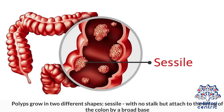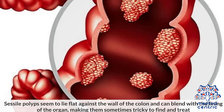Polyps grow in two different shapes. Sessile polyps have no stalk but are attached to the lining of the colon by a broad base. They seem to lie flat against the wall of the colon and can blend with the lining of the organ, making them sometimes tricky to find and treat.